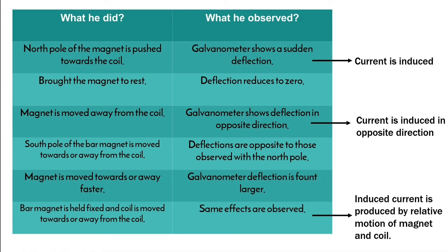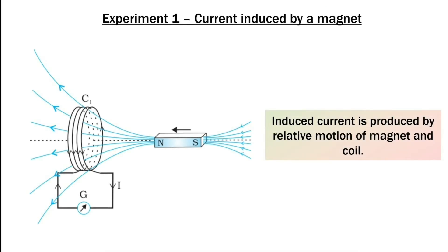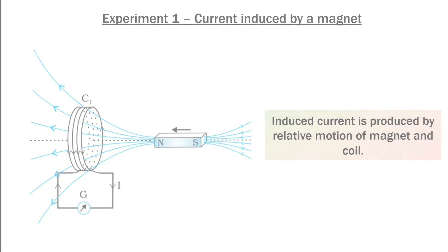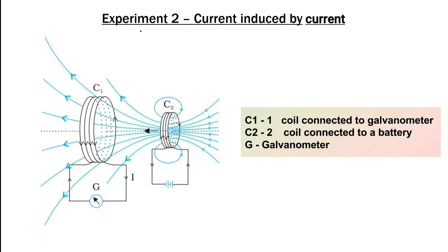From all these observations he concluded that relative motion between the magnet and the coil is responsible for the generation of electric current in the coil. This concludes experiment number one — current induced by a magnet. Now we move to experiment number two, current induced by current.